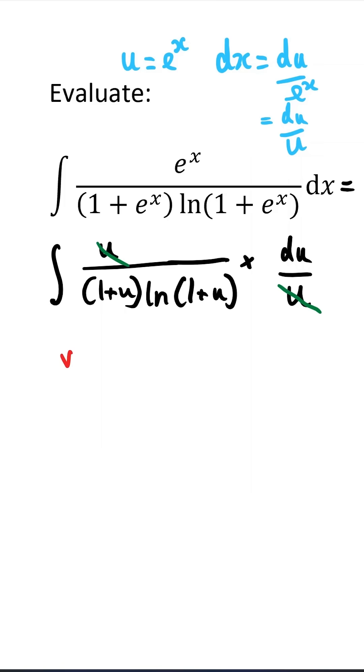So now we use the substitution v equals log of 1 plus u. And this gives us that du equals dv times (1 plus u). So now our integral becomes the integral of 1 over (1 plus u) times v.